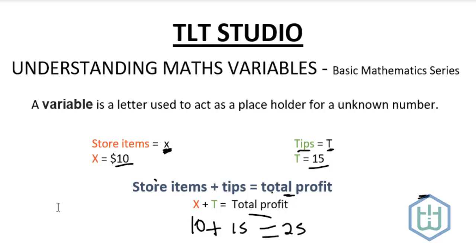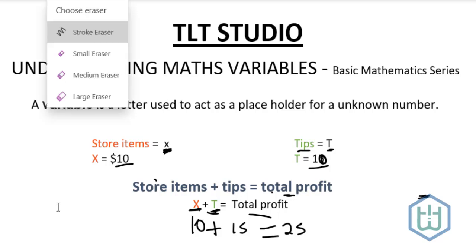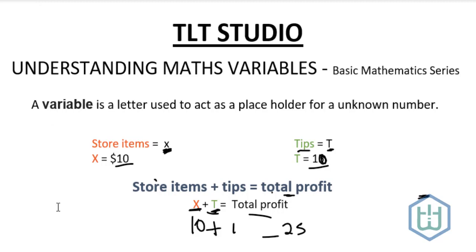Or better yet, what these letters represent. These letters are variables because the value of the letter can change at any time. For instance, what if tomorrow we get $10 instead of $15 for tips?